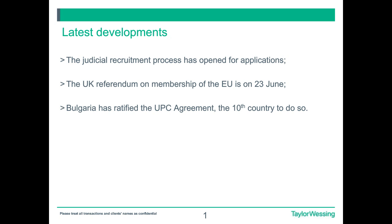The recruitment of legally qualified and technically qualified judges of the court — both first instance and Court of Appeal — has now been launched with the publication of vacancy notices and an application process. This process will encompass recruitment of both part-time and full-time judges. It's still not clear when the recruited judges will actually be decided and named, although potential users of the system will no doubt be keen to see some familiar names to boost their confidence in the decision-making quality of the court.